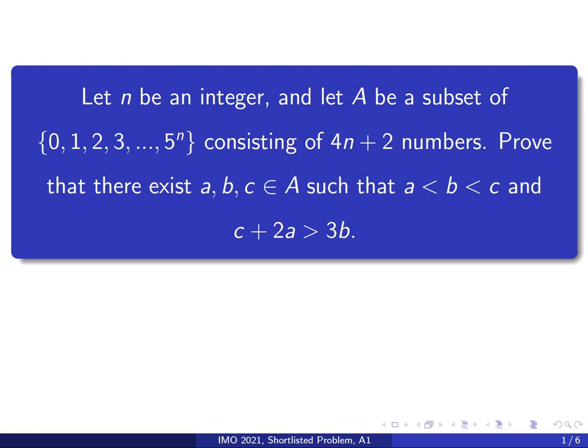Hello, in this video we're going to go over a shortlisted problem from IMO 2021. This is shortlisted problem A1, which means it was one of the problems that was proposed for the International Math Olympiad but didn't quite make it to the International Math Olympiad.